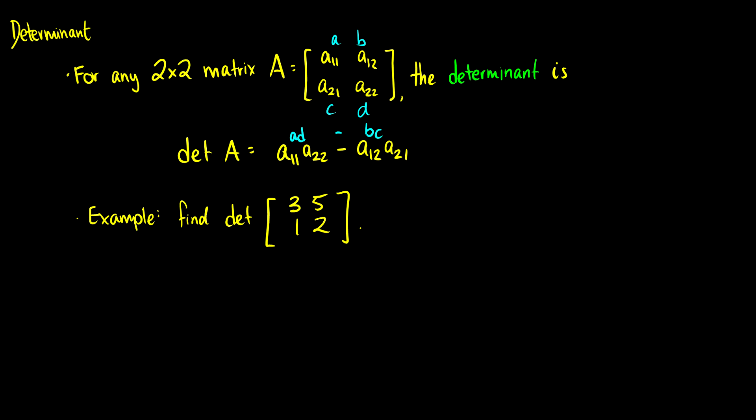So to do the determinant, normally we'll just do straight lines. So we would write this as the straight line 3, 5, 1, 2. And this stands for the determinant of the matrix. So this is equal to A11A22, so this would be 3 times 2 minus A12A21, so it's minus 5 times 1. So this is going to be 6 minus 5, which is equal to 1. So the determinant of this matrix is equal to 1.